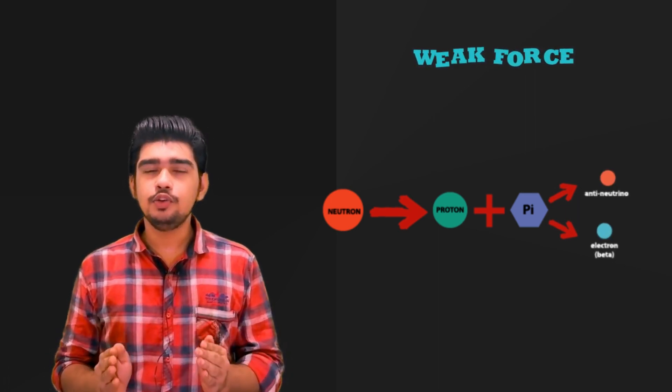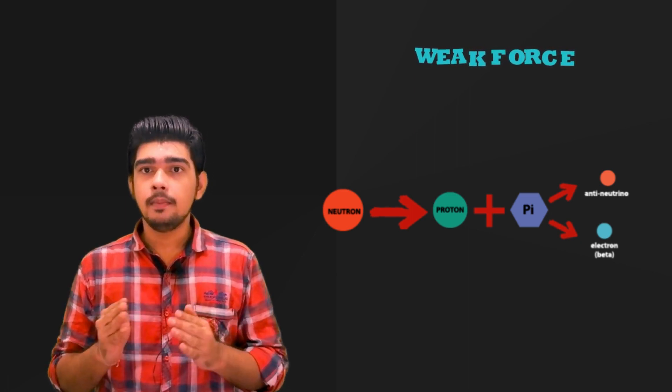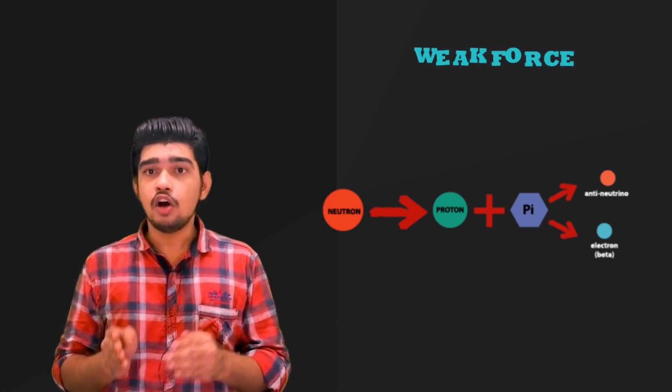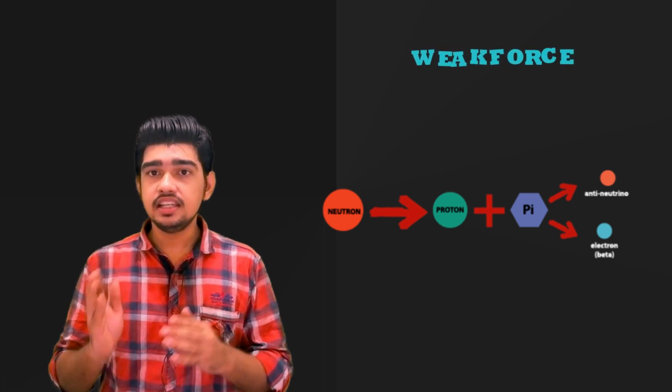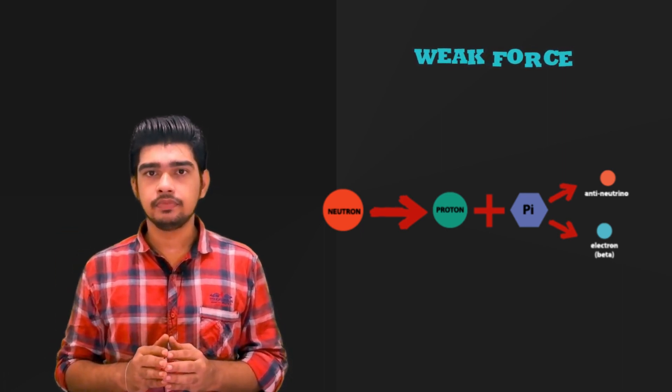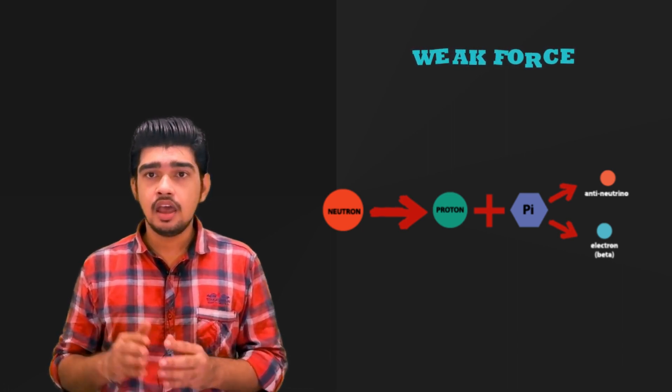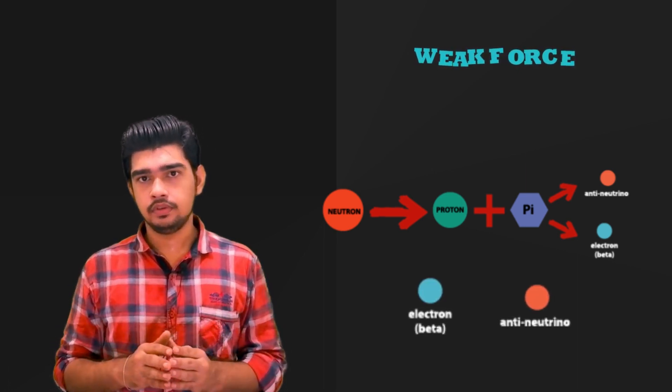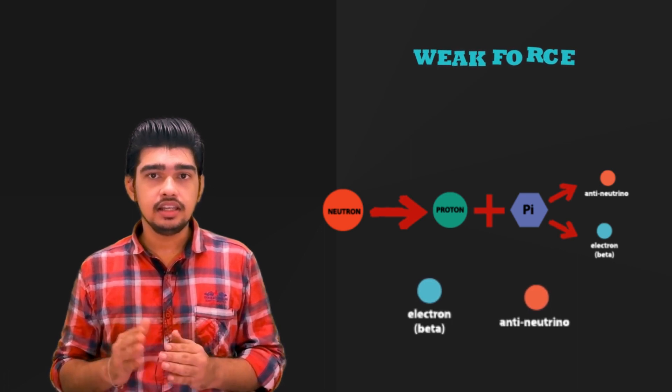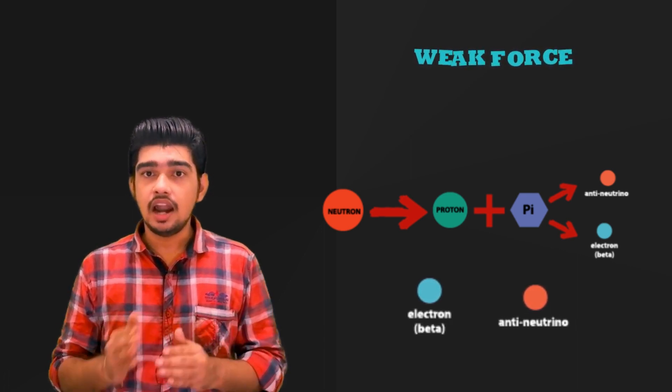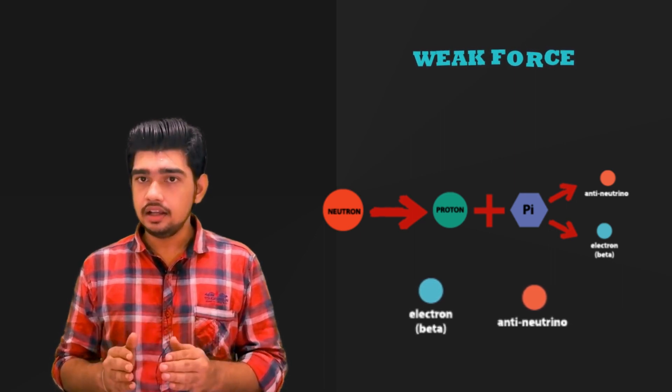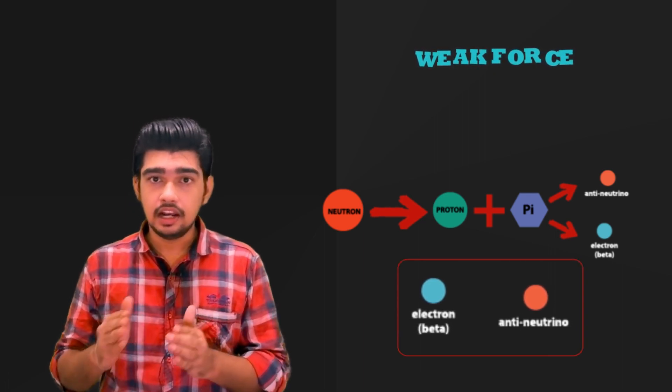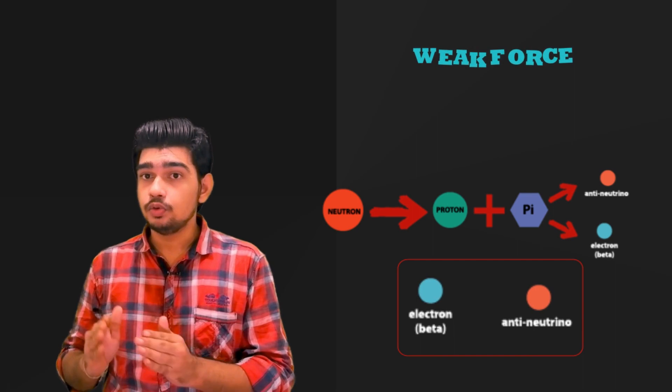Later, this pi-meson is converted into an electron and an anti-neutrino. Thus, a single neutron is converted into a proton plus electron plus anti-neutrino. This equation is also known as beta decay equation. You can see this equation in the shown image. Here, the weak force arises because of the interaction of electron and anti-neutrino. This interaction is weaker than nuclear force and electromagnetic force and stronger than gravitational force. The interaction between electron and anti-neutrino is known as weak force.